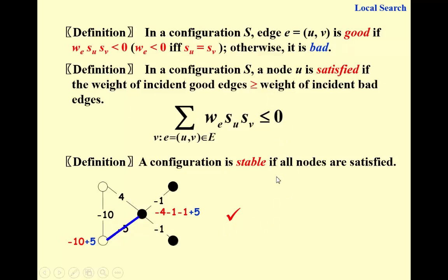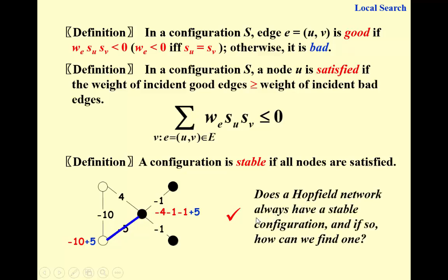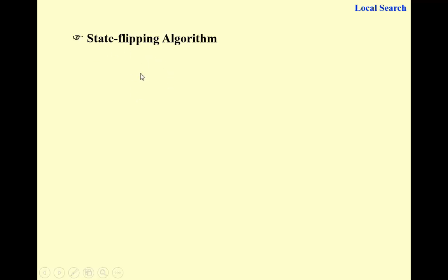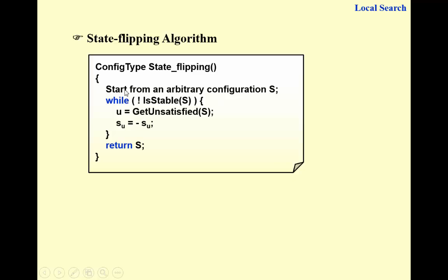In general, does a Hopfield network always have a stable configuration, and if so, how can we find one? We have an extremely simple algorithm called the state flipping algorithm. Whenever we encounter a node that is not satisfied, we flip it. We start from an arbitrary configuration — trivially, assign everyone the same color — check if it's stable, and if not, pick an unsatisfied node, flip its state, and keep going until everyone is satisfied.